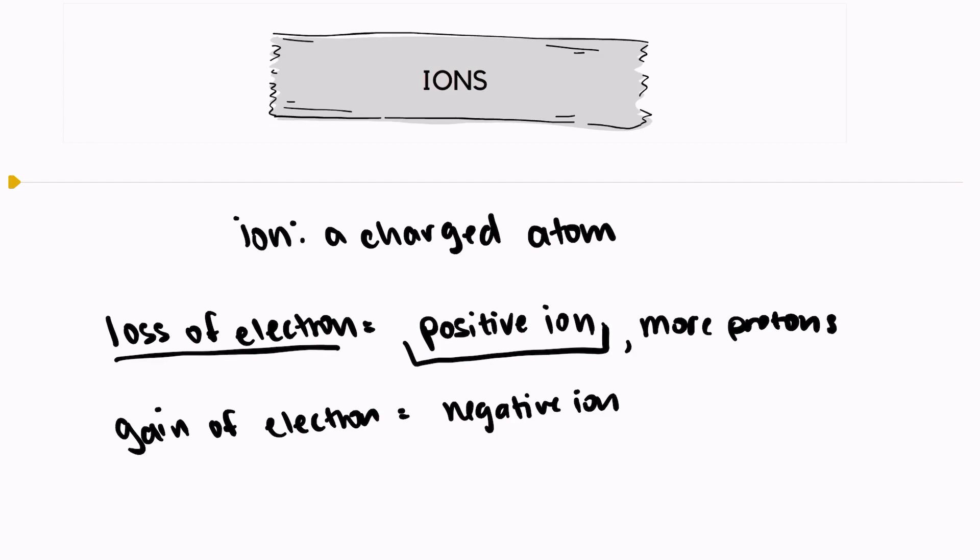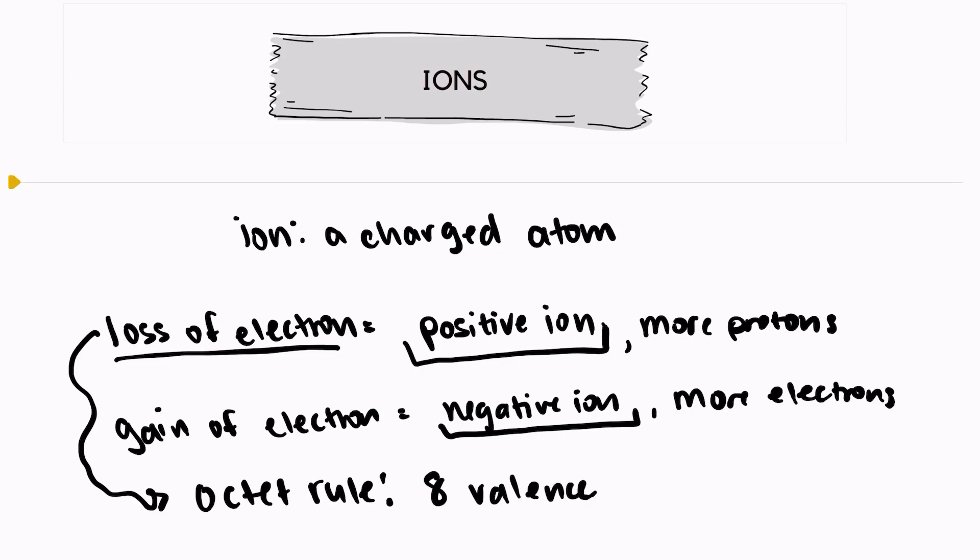When an atom gains an electron, that will result in a negative ion because now there's more electrons which have a minus one charge than there are protons. And both of these things will happen in order to satisfy the octet rule. So atoms can gain electrons or lose electrons in order to become stable and follow the octet rule that they want eight valence electrons in their outermost energy level.